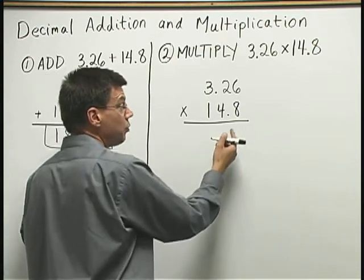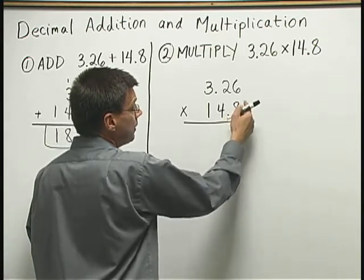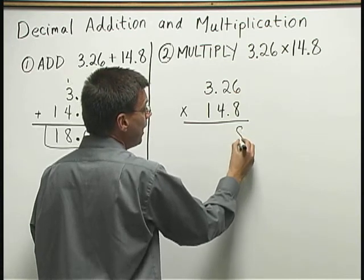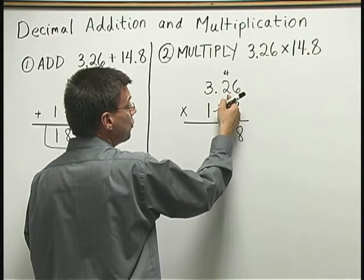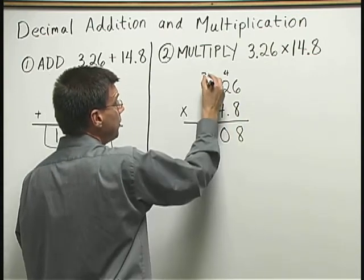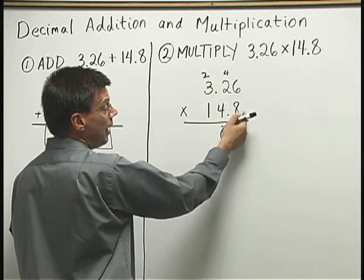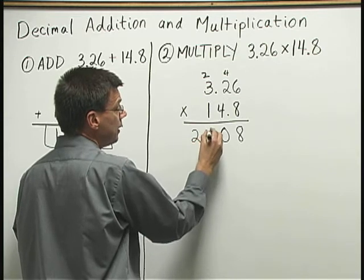Now let's go ahead and proceed as if we had whole numbers here. 8 times 6 is 48. Write down the 8, carry the 4. 8 times 2 is 16, plus 4 is 20. Write down 0, carry the 2. 8 times 3 is 24, plus 2 is 26.